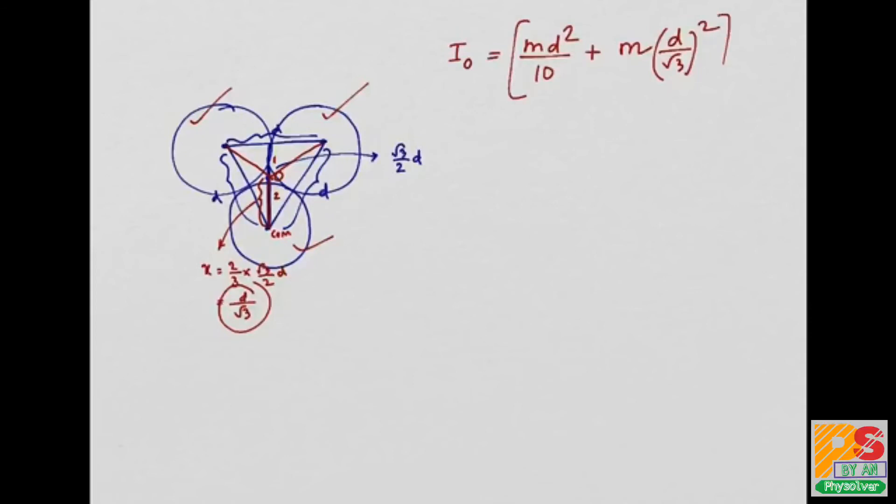So I_O should be times 3. This is MD squared, which is 13 by 10. So I_O is this.